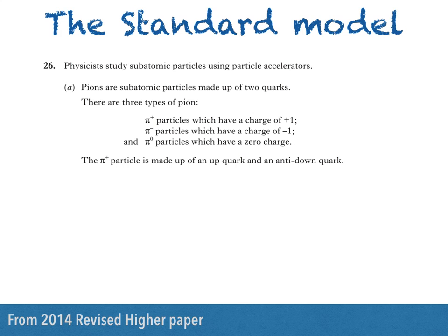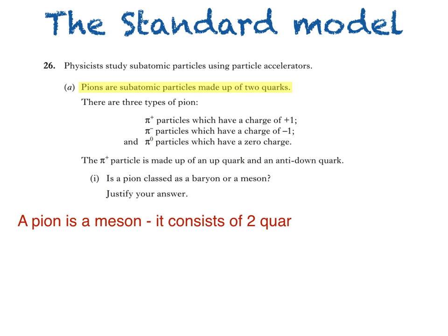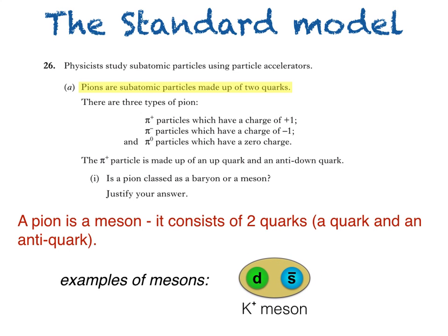Part one asks: is a pion classed as a baryon or a meson? Justify your answer. The important line in the question is this one, stating that pions are made up of two quarks. That means that a pion is a meson. Some examples of mesons are the K plus, which consists of a down quark and an anti-strange quark, and the pi plus, which consists of an up quark and an anti-down quark.